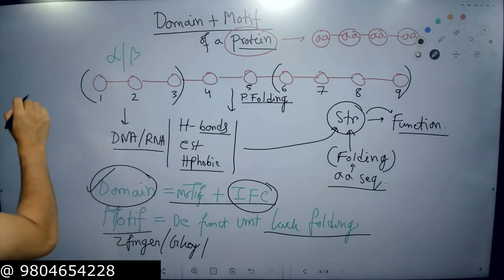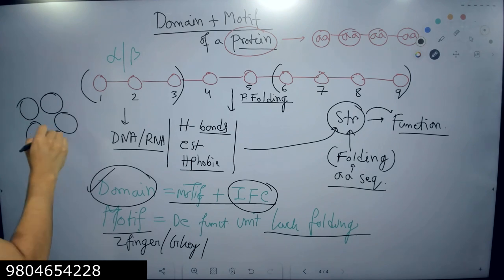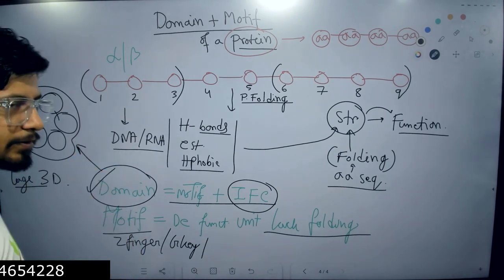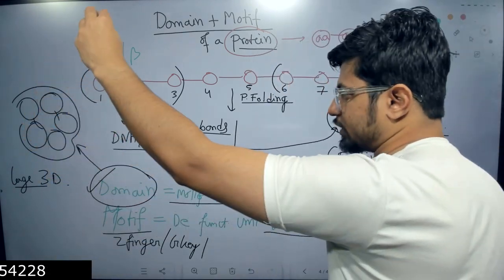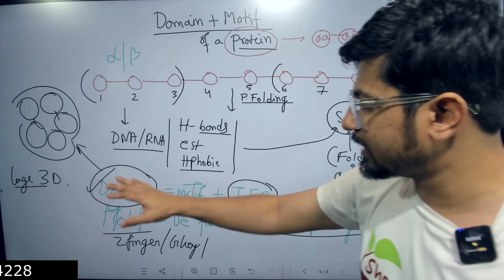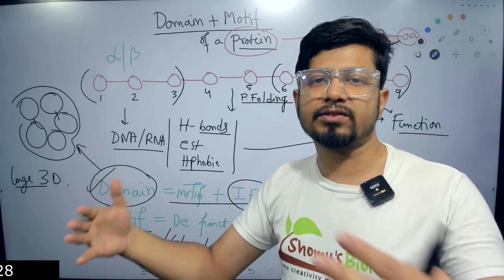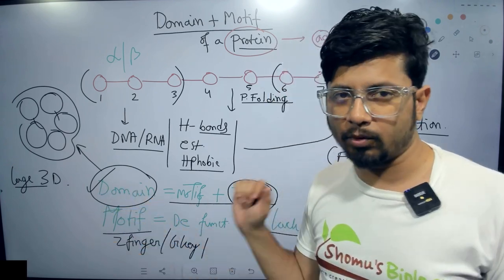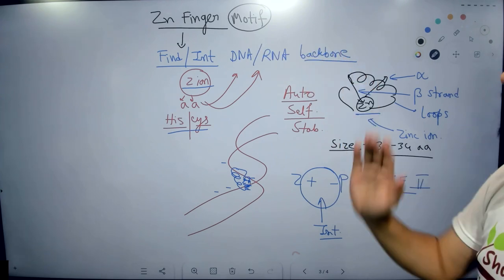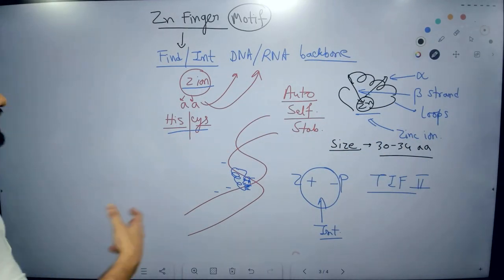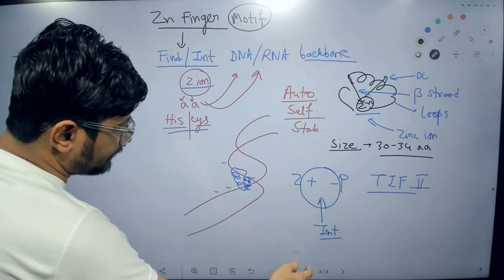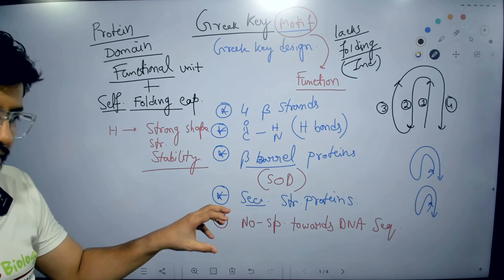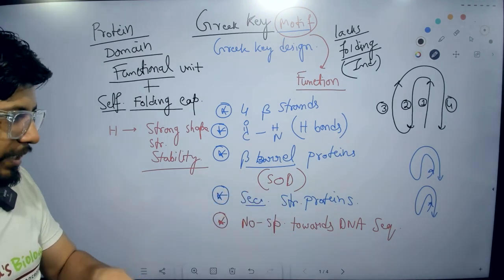Domains are small discrete functional elements of a protein that are assembled together to make a large 3D structure of the protein. A fully functional protein's large 3D structure is prepared from domains. Both domains and motifs are formed with the help of secondary structures — alpha helices, beta sheets, and loops. If you want to know more about zinc finger motifs or Greek key motifs — how they look, their constituents, and their functions — separate videos on those topics are available.